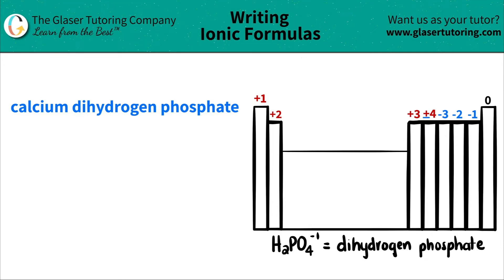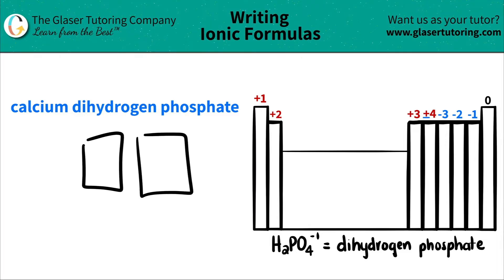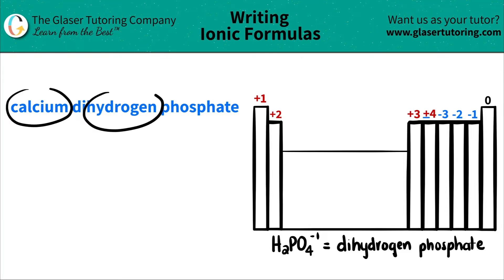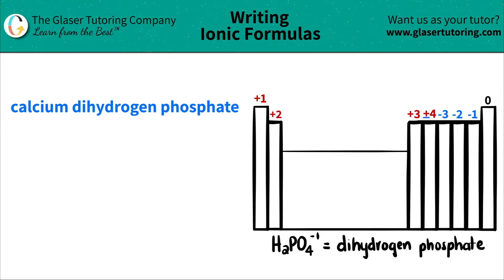With writing ionic compounds, you should always have two components. In this case, if I just look at this wording, it says calcium dihydrogen phosphate. There are technically three words here, but remember, there are only going to be two components.